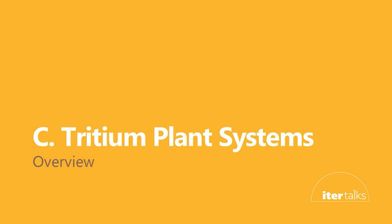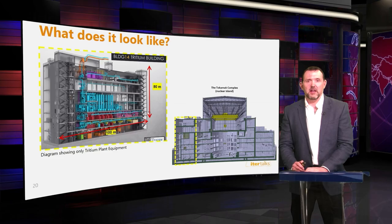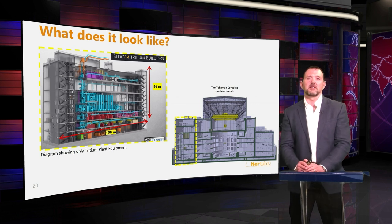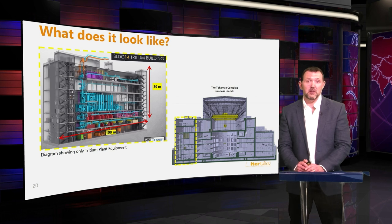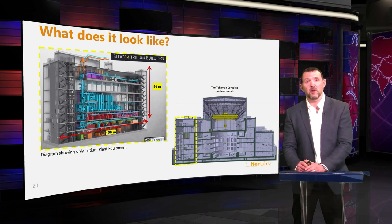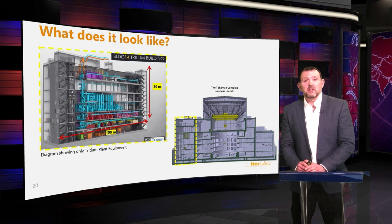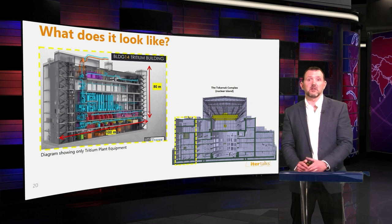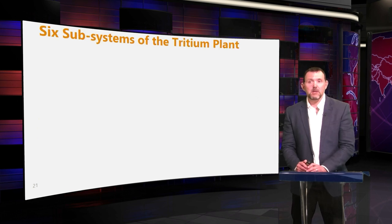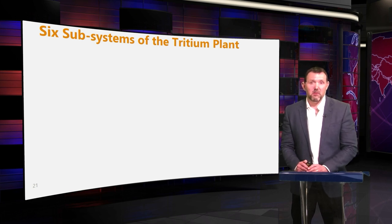Now let's look at how we've solved these challenges. The tritium plant is located within the Tritium building here at ITER — a fairly large building of seven stories, and we occupy the majority of the space. The graphic shows the various systems and where they're located. The Tritium building is part of the nuclear complex; it shares the same base mat as the diagnostic building and the Tokamak building. We have six subsystems in the tritium plant, and I'll take a quick run through each of them and how they're connected.